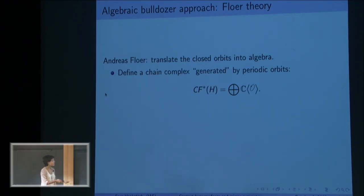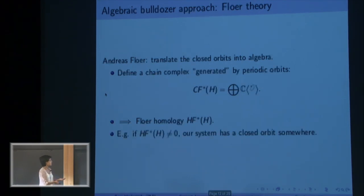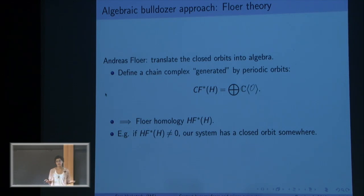If you take the homology of this complex you get a ring, and clearly this ring contains information about your dynamical system. For example, if it's non-vanishing, our system has a closed orbit somewhere.